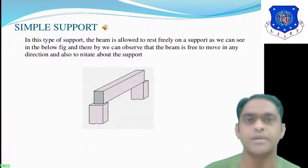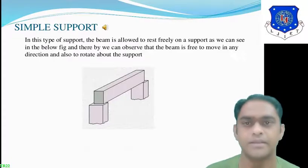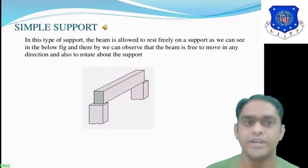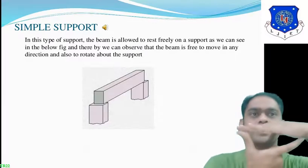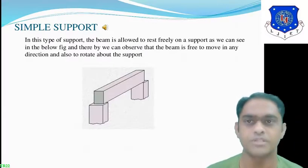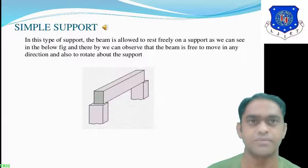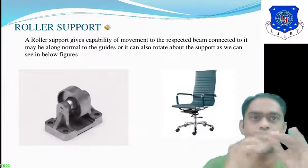The second type is simple support. In this type of support, the beam is allowed to rest freely on the support, as we can see in the figure. The beam is free to move in any direction and also to rotate about the supports. This type of beam is supported at both ends. In simple support, the supports are not permanently fixed — the beam is just resting at both ends.